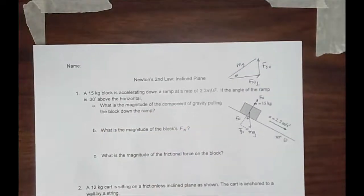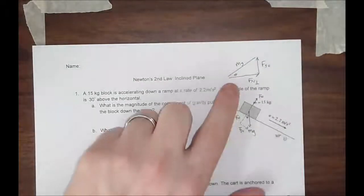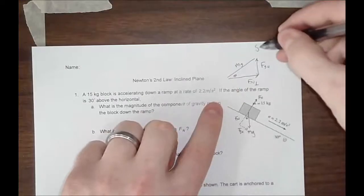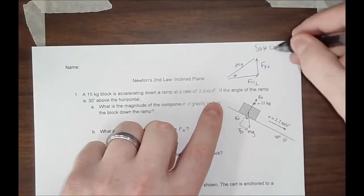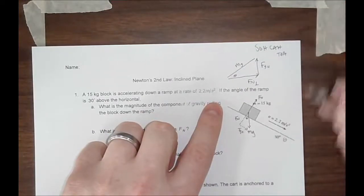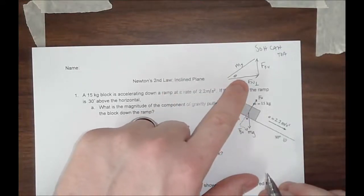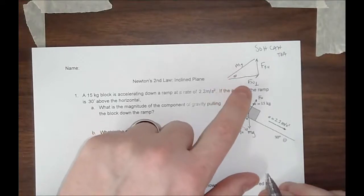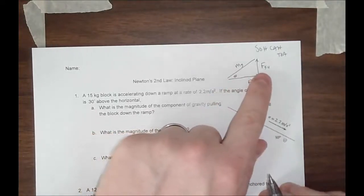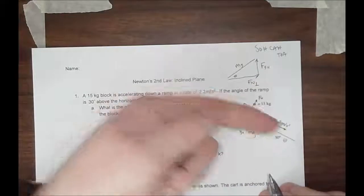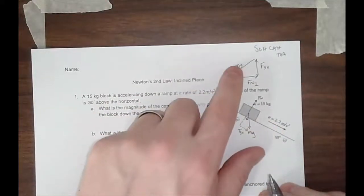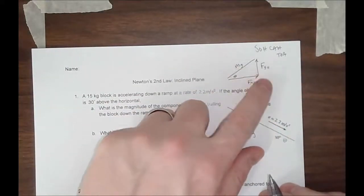Solving for this, you can use SOHCAHTOA or trig. In this case, your FN will be the adjacent and we always know the hypotenuse, so we're going to use cosine. And FG parallel, so down the ramp, that's the component of gravity, will be the hypotenuse and the opposite, so sine.